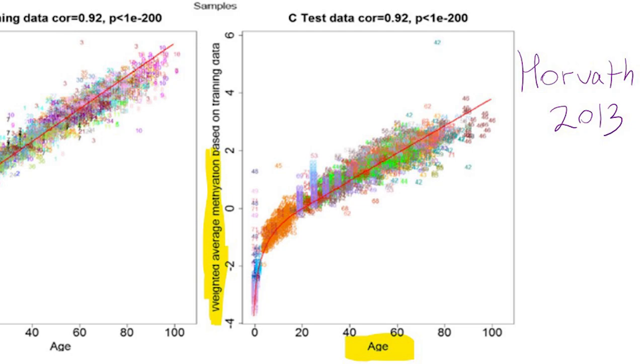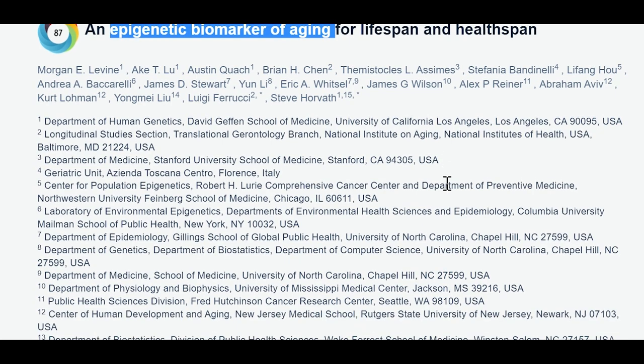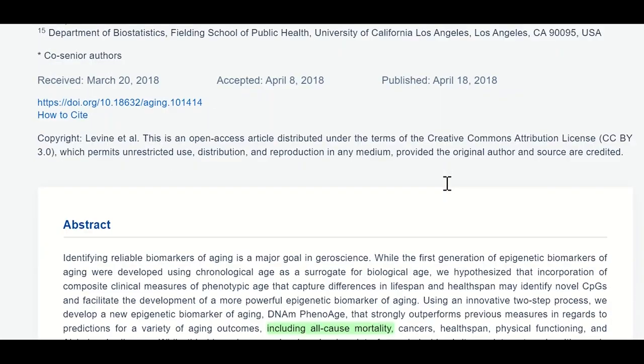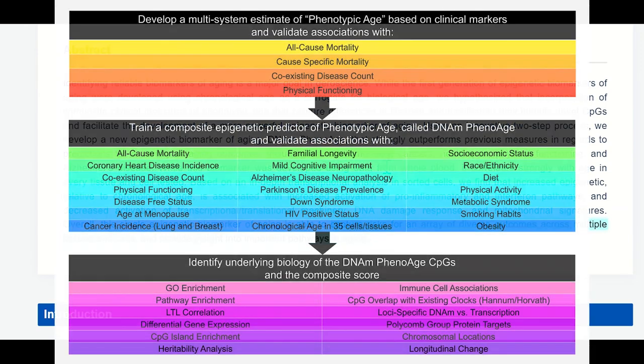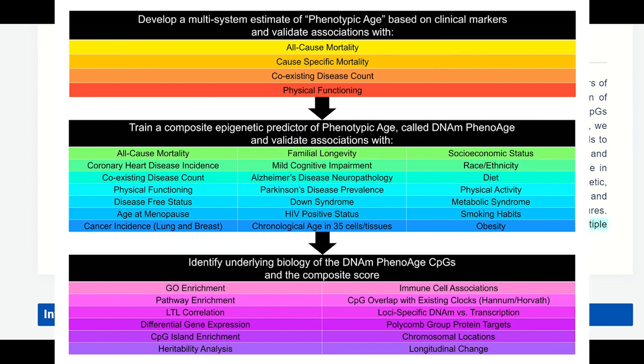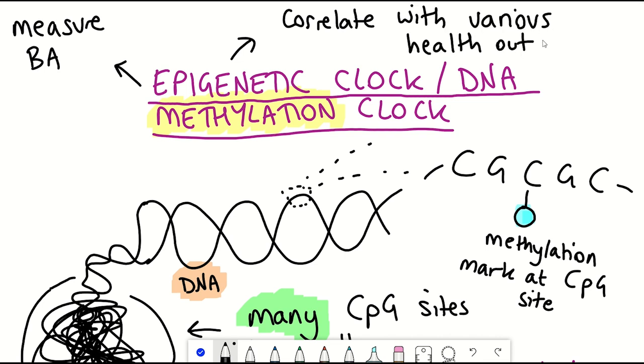And in addition to being able to predict chronological age they've also been shown to have other values such as being able to predict or cause mortality as well as morbidity and mortality risk when other clinical aging measures are also taken into account. So these epigenetic aging clocks have the ability to measure biological age and can also correlate with various health outcomes.